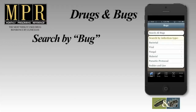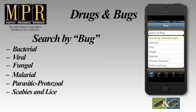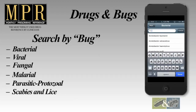Drugs and Bugs is organized for your convenience by pathogen type or drug class. The Bugs menu lets you search by the pathogen or common infection name. Datasets are available for bacterial, viral, fungal, malarial, parasitic, and protozoal infections, and for scabies and lice. Simply select an infection type and view a scrollable list of pathogens in alphabetical order.